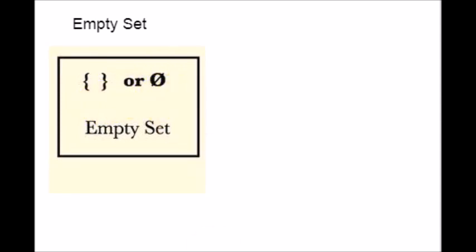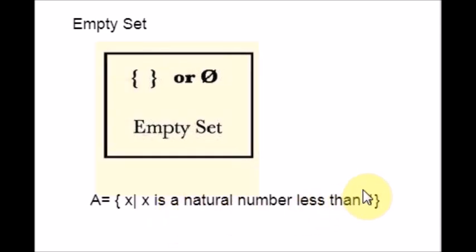Let me give you one example. Please consider this example: A is a set such that x is a natural number less than one. We know that there is no natural number less than one. Therefore, the set A contains no element and hence it is an empty set.